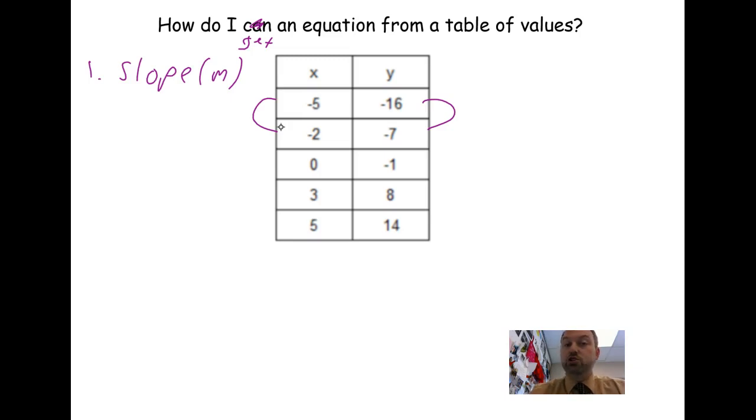All right, if I had just two points and not a table, then I'd have to subtract, delta y over delta x. So how do you get from negative 16 to negative 7? You add 9. How do you get from negative 5 to negative 2? You add 3. So the slope is 9 over 3, which reduces to just 3.